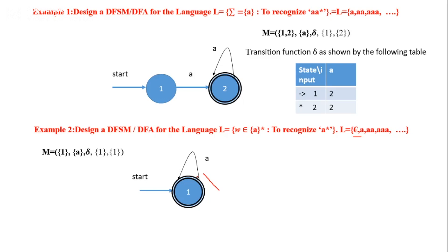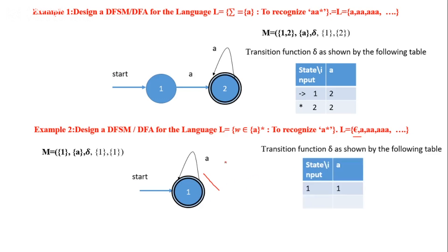Now we can write the quintuple M = (K, Σ, δ, s, A). In this case, the start state and accepting state are the same. For delta, there is only one state and one column, so one row and one column: state 1 on input 'a' goes to state 1. This concludes the DFSM examples; more examples will be seen in the next video.